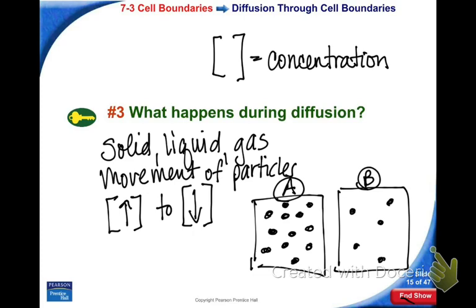The random movement of particles is called Brownian movement. Particles are always moving — atoms are always moving, even in a solid. It's because the particles are always moving and bouncing into each other that they want to spread out as much as possible, so they don't bounce into each other as often.